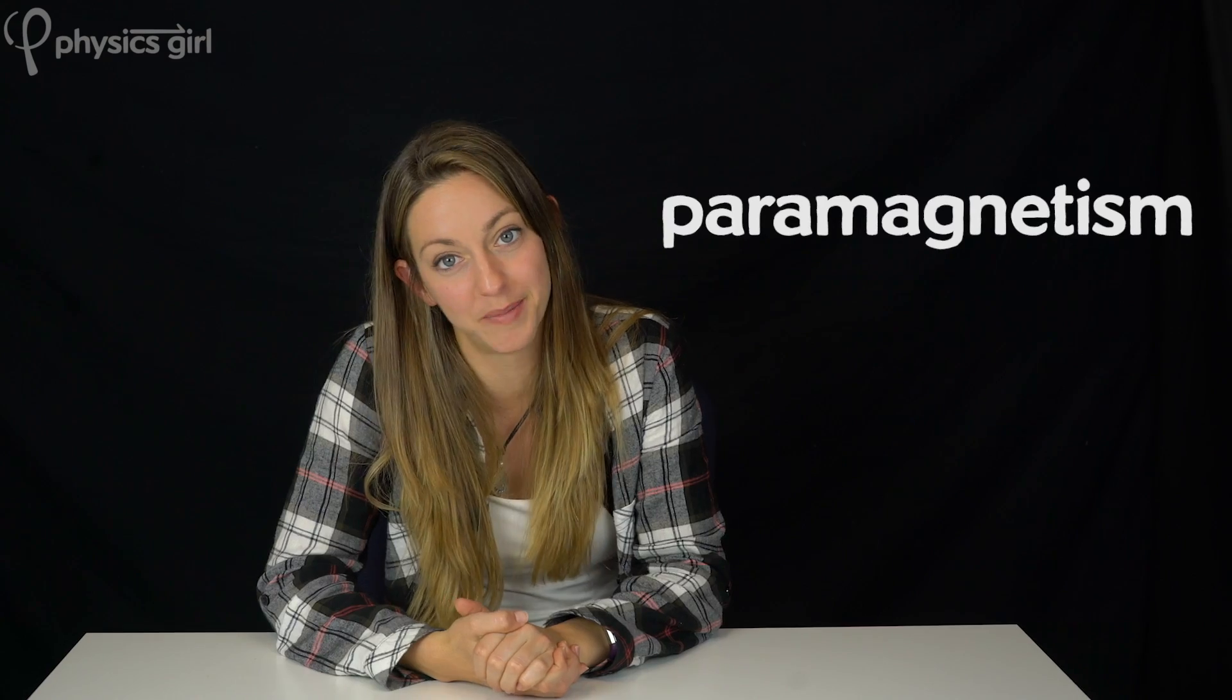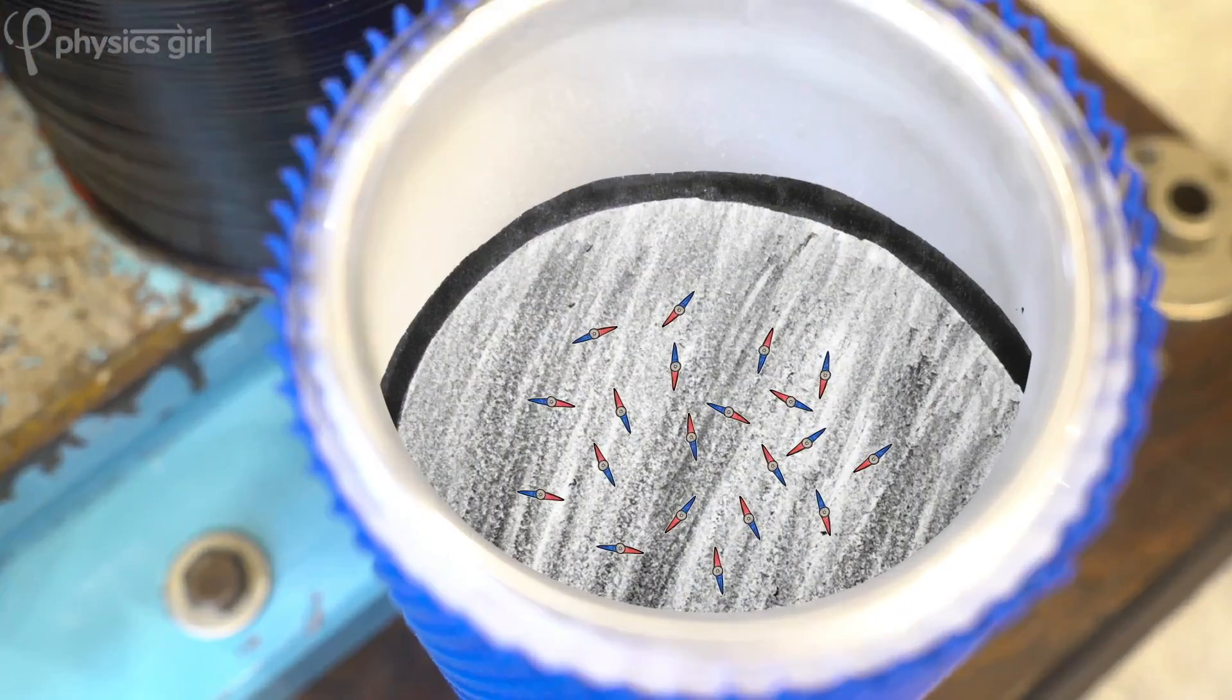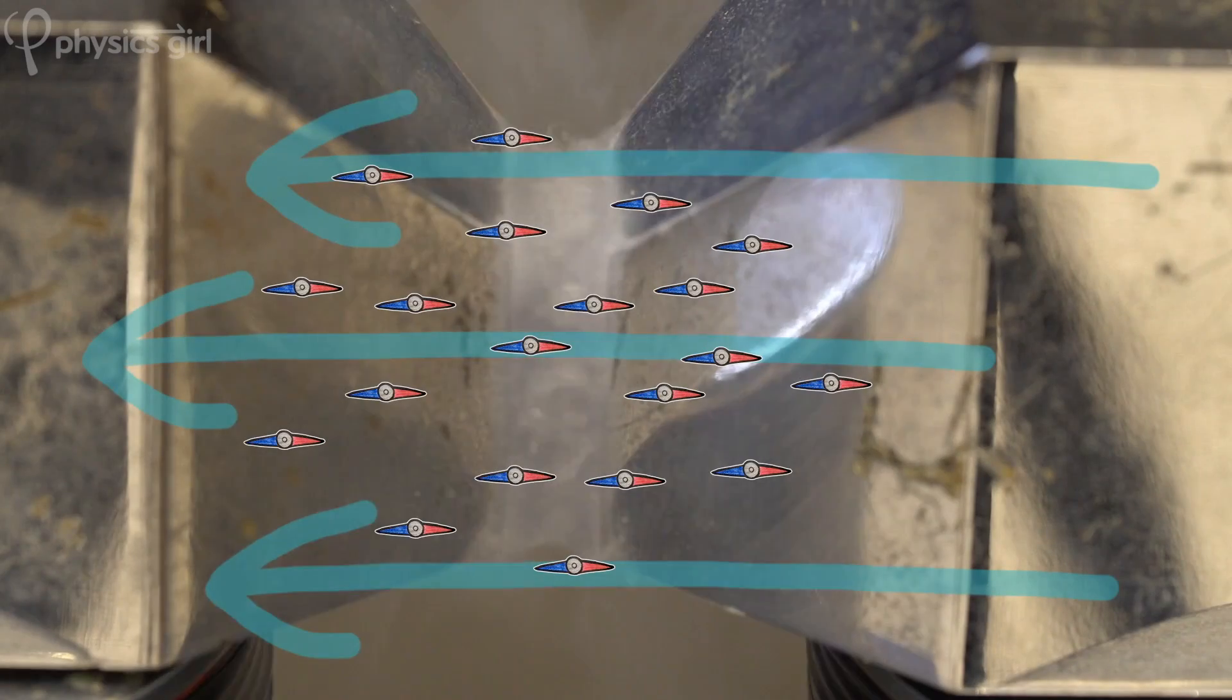So liquid oxygen has this property called paramagnetism. It reacts mildly to an external magnetic field. And all the little mini magnets that make up the oxygen align with the external magnetic field.